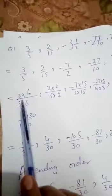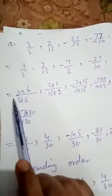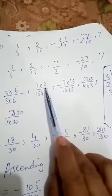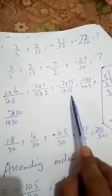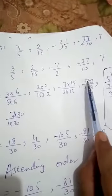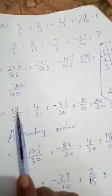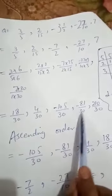The LCM is 30. We will convert all fractions to have denominator 30 according to the comparison rule. Multiplying: 3/5 → multiply by 6 → 18/30; 2/15 → multiply by 2 → 4/30; −7/2 → multiply by 15 → −105/30; −27/10 → multiply by 3 → −81/30; and 7/1 → multiply by 30 → 210/30.